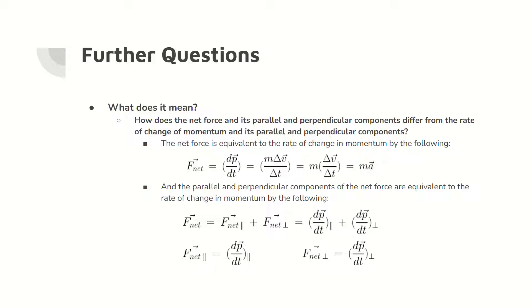The parallel and perpendicular components of the net force are equivalent to the parallel and perpendicular rates of change in momentum by the definition of the net force, which is equivalent to the rate of change in momentum. However, the net force in part one cannot be calculated without knowing the masses of both the black hole and the star, while the rate of change in momentum of the star can be used to find the net force and its components.